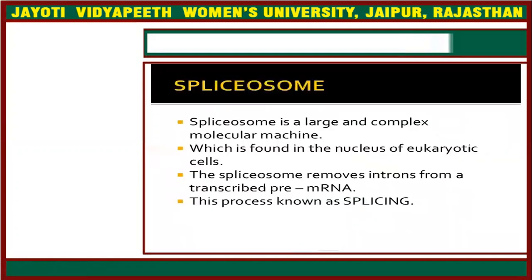The spliceosome is a large and complex molecular machine found in the nucleus of eukaryotic cells, and the spliceosome removes introns from the transcribed pre-mRNA.